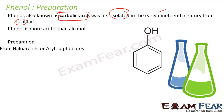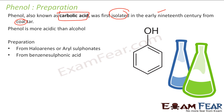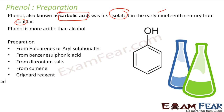We'll first talk about the preparation of phenol from haloarenes, from benzene sulfonic acid, from diazonium salts, from cumene, from Grignard reagent, and from phenolic acid. We'll try to prepare phenol from all these methods.